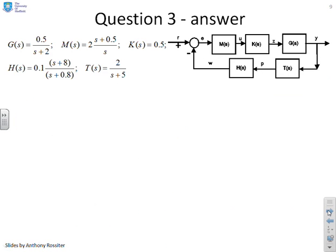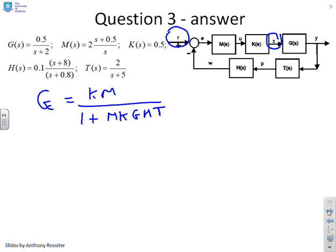First, we were asked to find the transfer function between R and Z. We can write down by inspection that the forward path is KM and the return path is everything in the loop: 1 plus MKGHT. So KM is S plus 0.5 over S, and K was a half but there was 2 in M, so the half times 2 cancels to give 1.